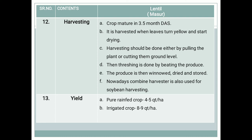Regarding harvesting and yield: this crop matures in about 3.5 months after sowing. It is harvested when leaves turn yellow and start drying. Harvesting is done either by pulling the plant or cutting from the ground level. Threshing is done by beating the produce, which is then winnowed, dried, and stored in a proper place or in warehouses. Nowadays, combined harvesters are also used for lentil harvesting.